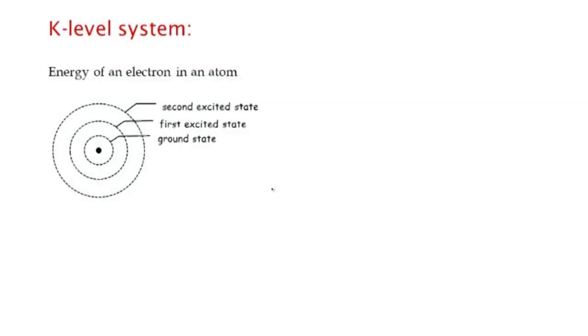Recall that the energy of an electron in an atom is quantized. This means that the electron cannot take on any arbitrary energy — the energy must be one of a discrete number of energy levels. Imagine we've limited the electron's energy so that it's in the ground state, the first excited state, and so on up through the k minus first excited state.